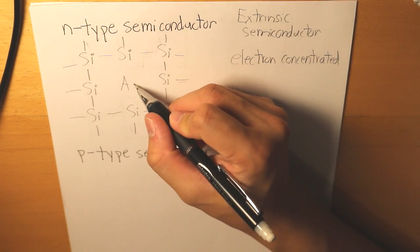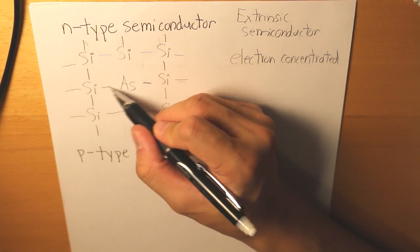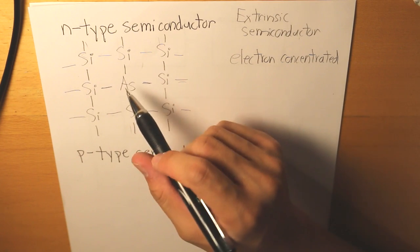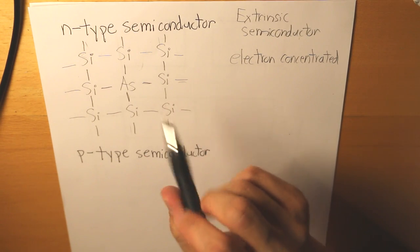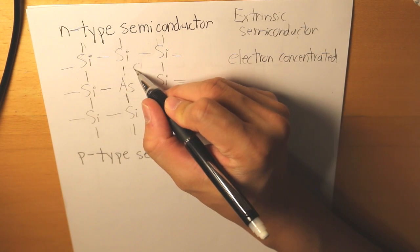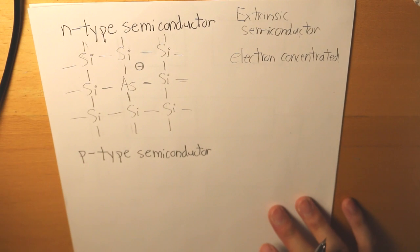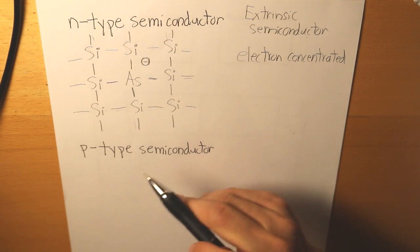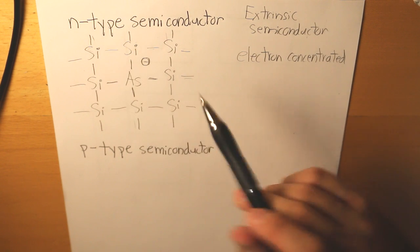For example, we put arsenic into it. Arsenic has four valence electrons that bond to the surrounding silicons, and then there is this extra fifth electron. That extra electron is what makes our semiconductor extrinsic with an n-type.